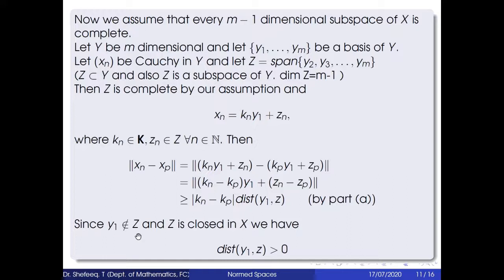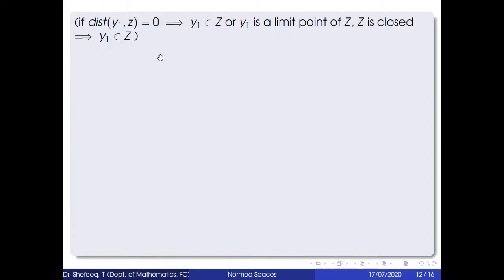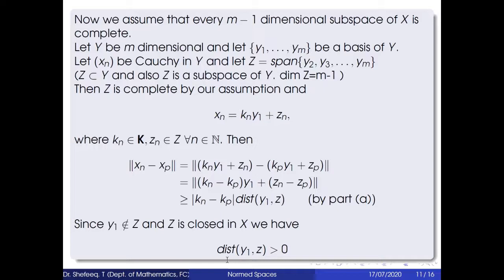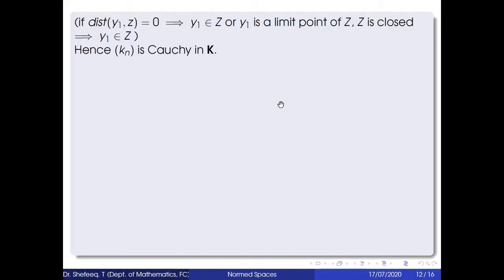If dist(y₁, Z) = 0, then y₁ belongs to Z or is a limit point of Z, but Z is closed, so y₁ ∈ Z — a contradiction. So dist(y₁, Z) > 0. Since |kₙ − kₚ| ≤ ‖xₙ − xₚ‖ / dist(y₁, Z) and xₙ is Cauchy, kₙ is Cauchy in 𝕂. Since 𝕂 is complete, kₙ converges to k in 𝕂.